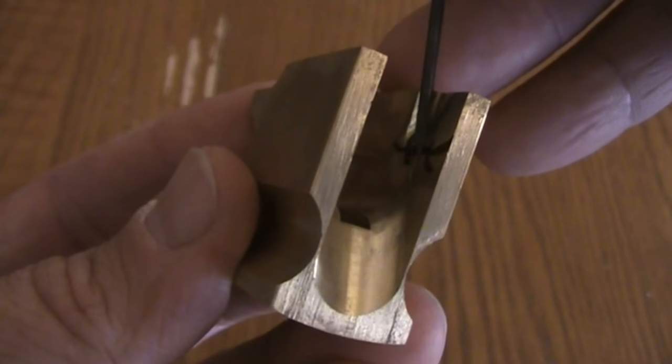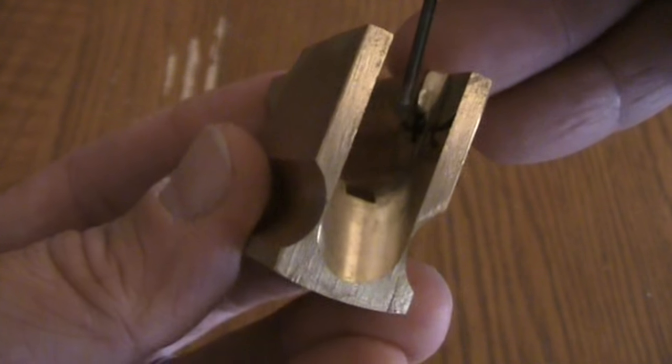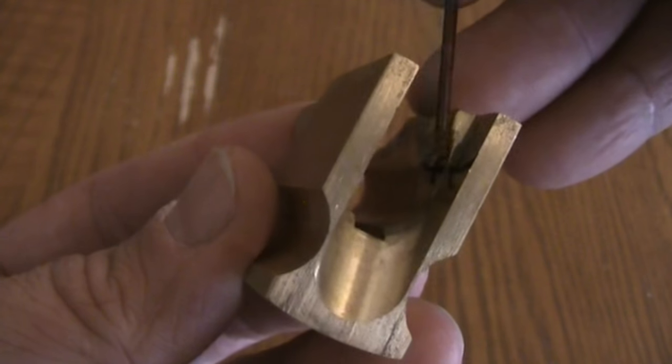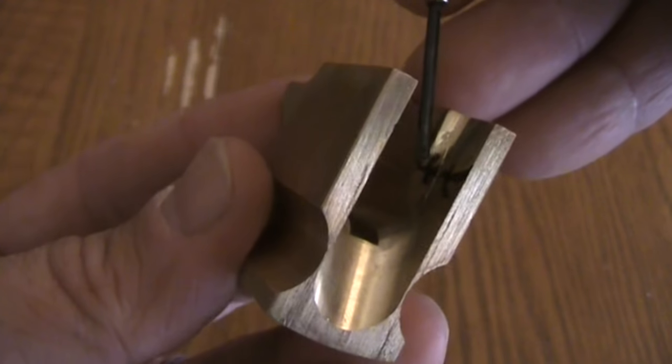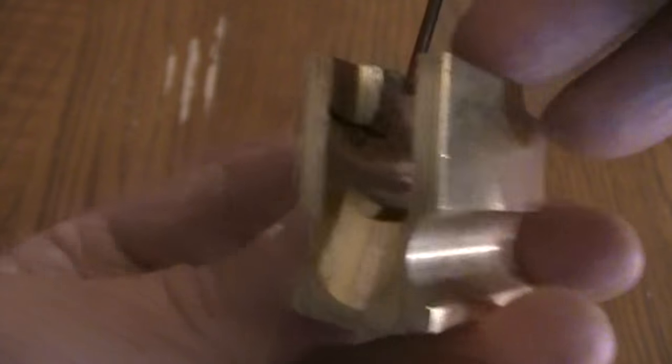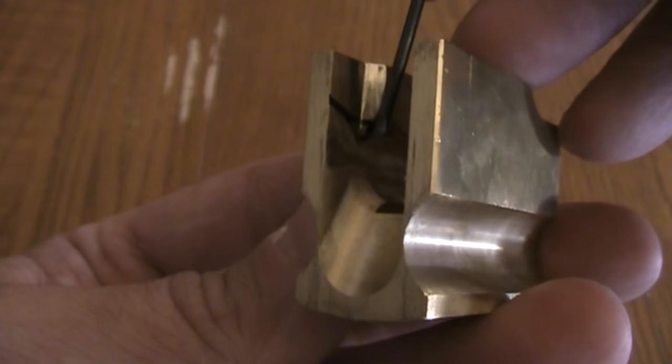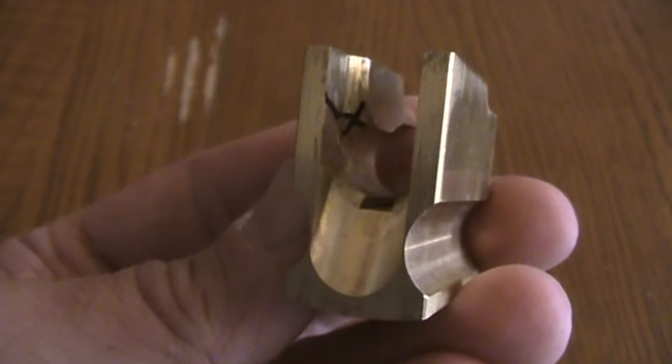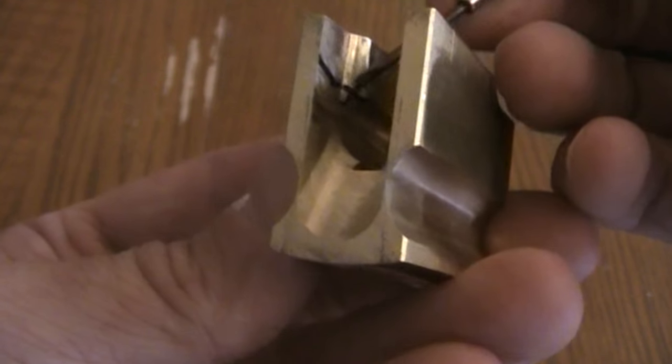What I do is I take a Dremel tool with a grinding tip at medium speed, gently round off those 90 degree angles at this X and at that X. Then what you do is swap out your grinding tip for a polishing tip and bring it up to a nice polished little shine.